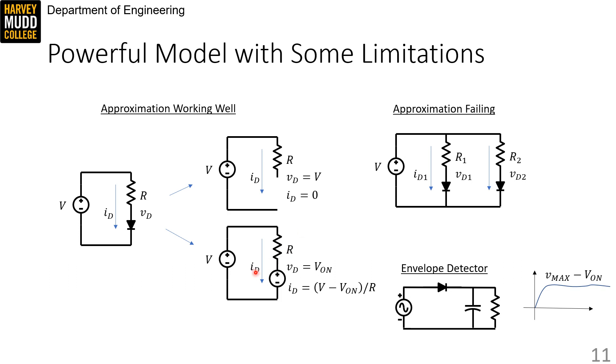The bottom circuit assumes the diode is conducting, and so the diode has been represented by a voltage source of value VON that pins VD to VON. ID is calculated using the voltage difference across the resistor, and it's found to be V minus VON over R.